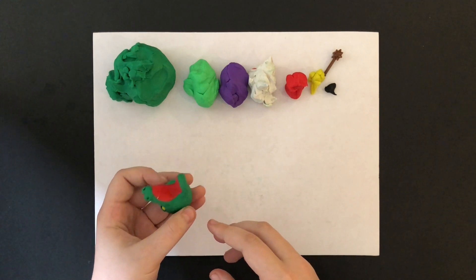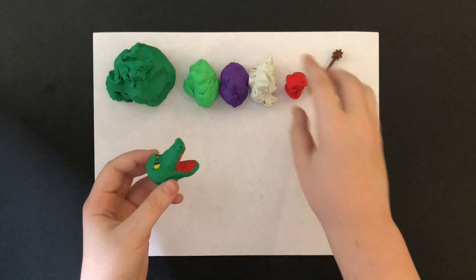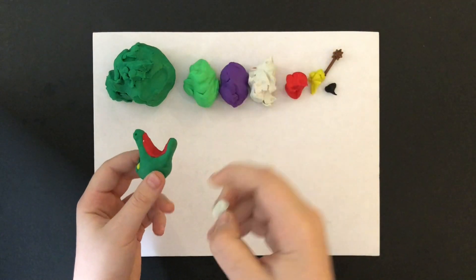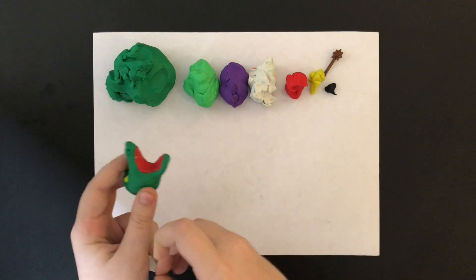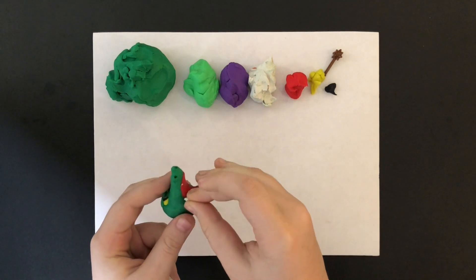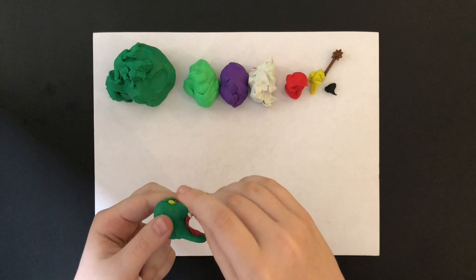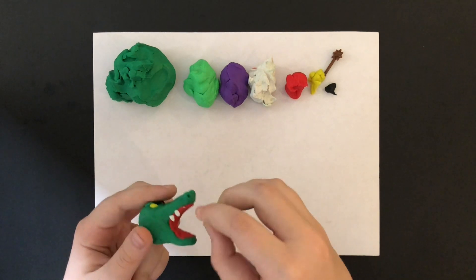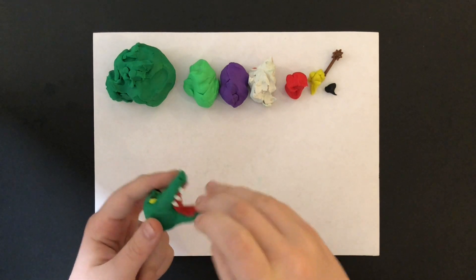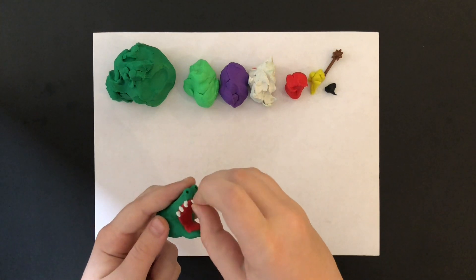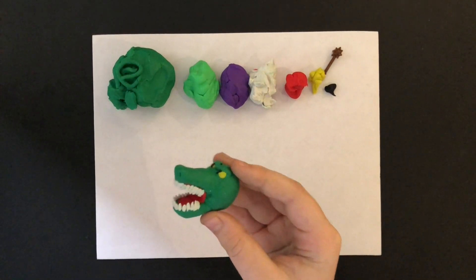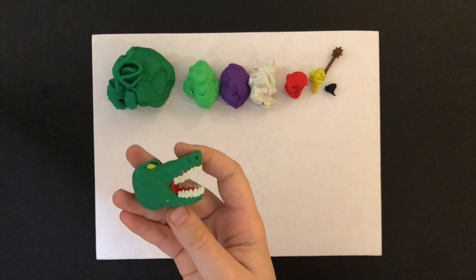For the next step, I will be making the dragon's teeth. For that, I will need white clay. This is how it looks like when you place the teeth all inside the mouth.